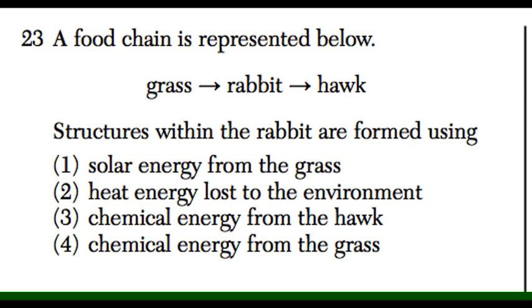So solar energy from the grass? No, solar energy comes from the sun. Heat energy lost to the environment? Doesn't really make sense for this. Chemical energy from the hawk? No, not exactly. Correct answer is four: chemical energy from the grass.